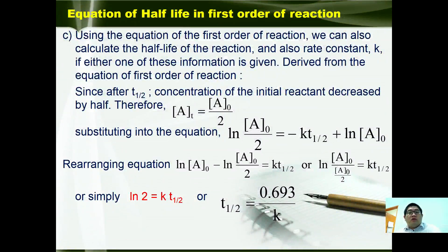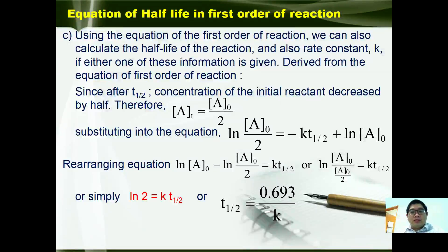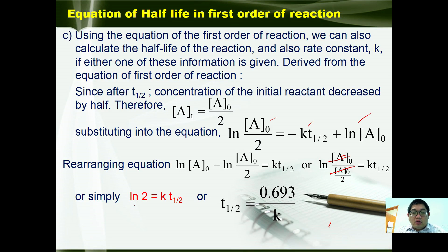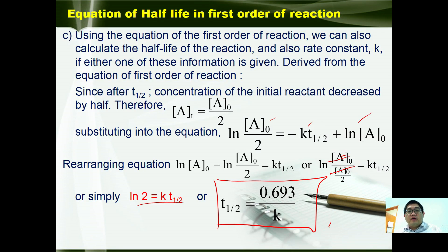Using the first order equation, we can also calculate the half-life and rate constant if either information is given. At half-life, [A]t equals [A]₀/2. Substituting into the equation: ln([A]₀/2) equals negative k·t₁/₂ plus ln[A]₀. Rearranging gives ln[A]₀ minus ln([A]₀/2), or ln([A]₀ / ([A]₀/2)), which simplifies to ln 2 equals k·t₁/₂. Therefore, t₁/₂ equals 0.693 over k. This is the half-life equation for a first order reaction.